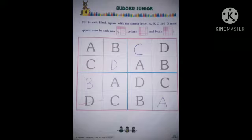Fill in each blank square with the correct letter. A, B, C and D must appear once in each row. So children, what you do here, you complete this letter with the appear once in each row.